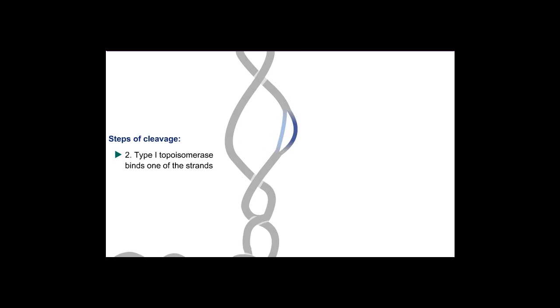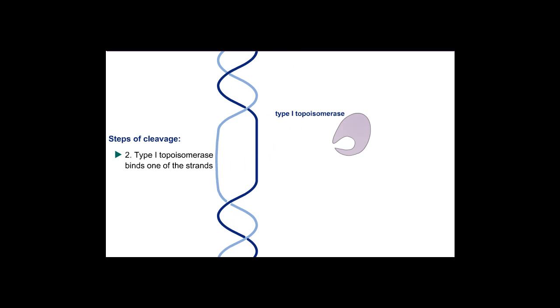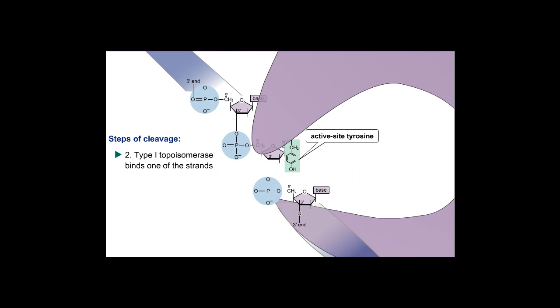One of the DNA strands binds in a cleft in the type 1 topoisomerase, placing it near the active site tyrosine. The active site tyrosine becomes deprotonated, probably by a nearby basic amino acid residue. The result is a negatively charged oxyanion.